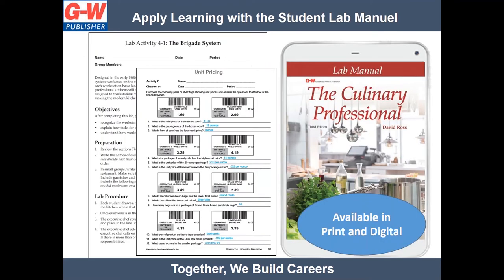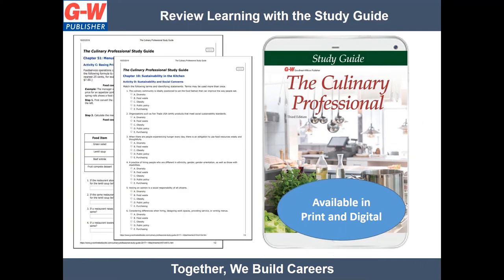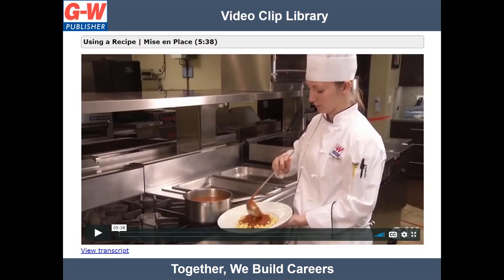The Student Lab Manual guides students through applying the key concepts of chapters. These pages can be printed or students can complete them digitally. The Student Study Guide contains activities that review culinary terminology and chapter content and further explore math applications in the workplace. Access the Video Clip Library, which provides dynamic visual instruction of essential culinary skills, with video instruction led by industry-recognized culinary experts — our textbook authors.